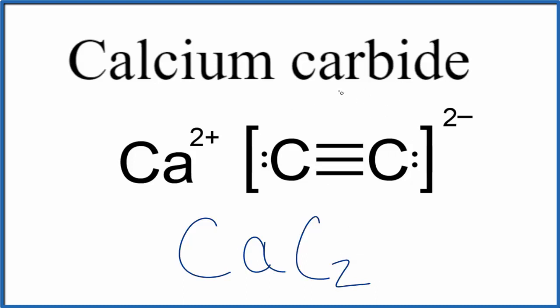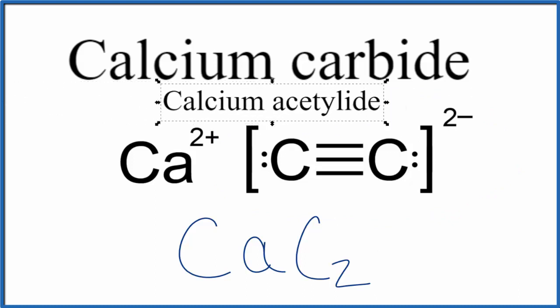What often confuses people is this carbide here. You have to realize that the carbide anion is C2 two minus. Sometimes the name for CaC2 is calcium acetylide. More commonly though, you'll see it as calcium carbide.